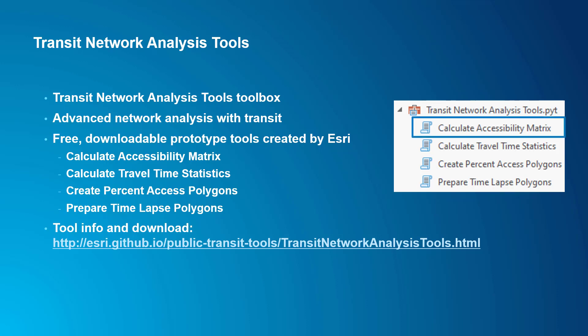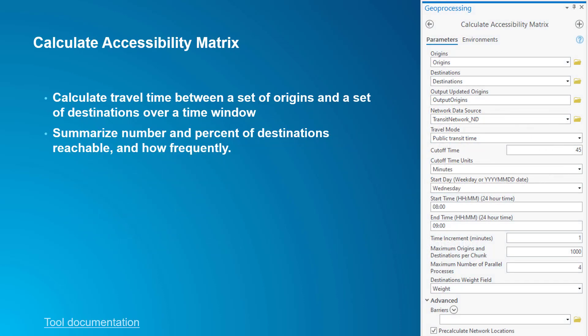In this video, I'm going to talk about the Calculate Accessibility Matrix tool. This tool solves a big OD cost matrix for your designated origins and destinations. For each origin, it counts the number of destinations reachable within the specified travel time limit. You can use a field in the destinations data as a weight — for example, if your destinations are census blocks with a field indicating the number of jobs located there, the tool will sum the number of jobs reachable rather than the number of census blocks reachable. The tool deals with variability in access over time in a similar way to the Prepare Time Lapse Polygons tool we looked at earlier.